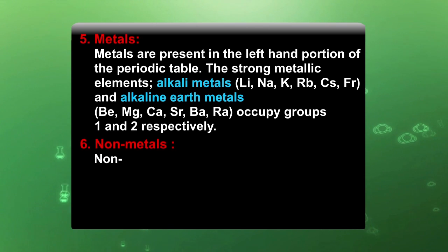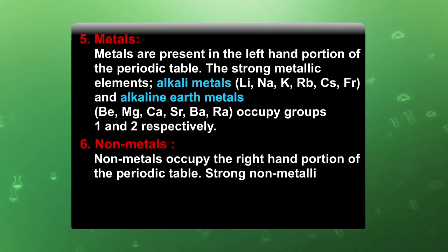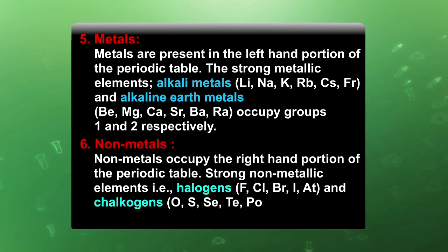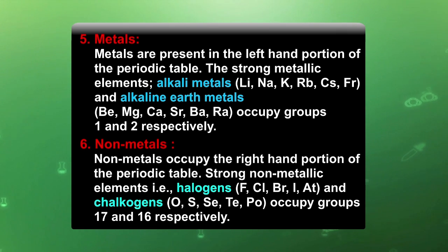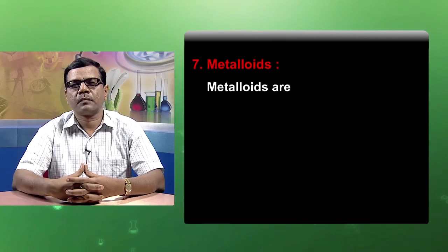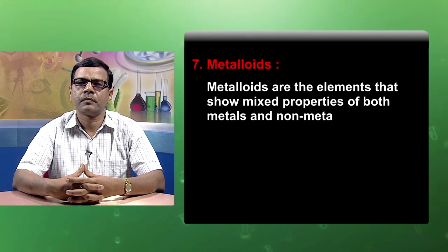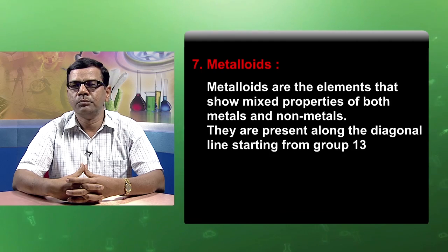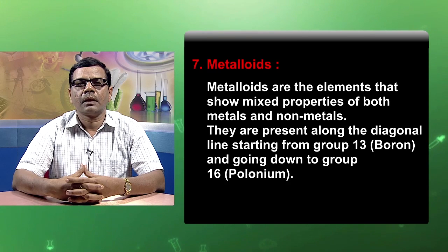Non-metals occupy the right-hand position of the periodic table. Strong non-metallic elements, that is halogens — fluorine, chlorine, bromine, iodine, astatine — and the chalcogens, that is oxygen, sulphur, selenium, tellurium, polonium, occupy group 17 and 16 respectively. The metalloids are the elements that show mixed properties of both metals and non-metals. They are present along the diagonal line starting from group 13 boron and going down to group 16 polonium.